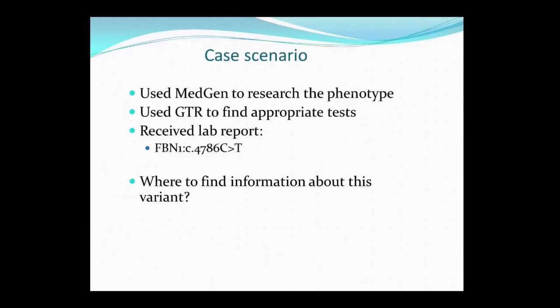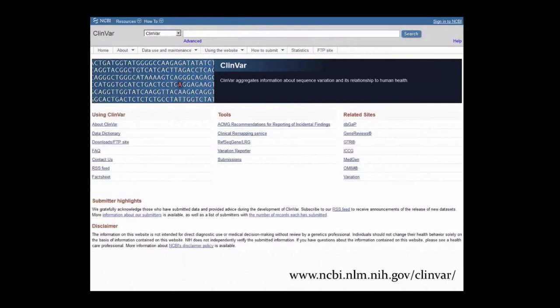Now we'll get back to our case scenario. We used MedGen to research the phenotype, and we looked through GTR to find the appropriate test. We ordered that test and received back the lab report. The variant in the report is c.4786C>T in the FBN1 gene, and you'd like to find out more information about this variant. ClinVar is a great place to go and look up that information. You can start at the ClinVar homepage, which has links to documentation and related tools and resources. Like many NCBI resources, ClinVar uses a search bar at the top of the page. We'll start by searching for the FBN1 gene that our variant of interest is in.